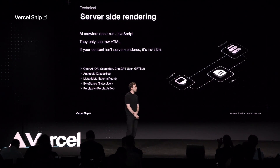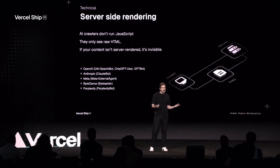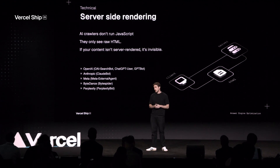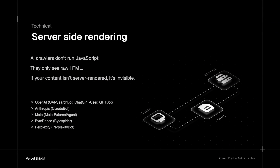The first technical strategy is server-side rendering. For answer engine optimization, it is absolutely critical. All the top crawlers from OpenAI, Anthropic, Meta, etc. are not rendering on-page JavaScript. That means if you're dynamically fetching content and rendering it client-side, it's going to be absolutely invisible to the crawlers. It's of the utmost importance to make sure all your content is server-side rendered. As Next.js developers, we know how to do that quite easily with the app router, incremental static regeneration, static generation, etc.